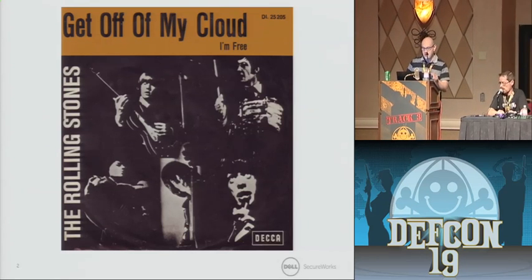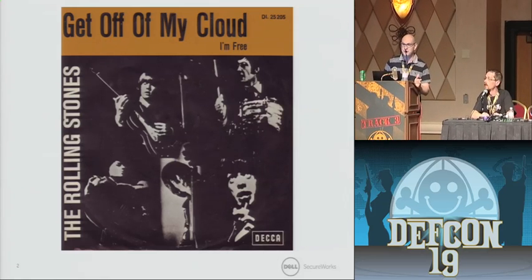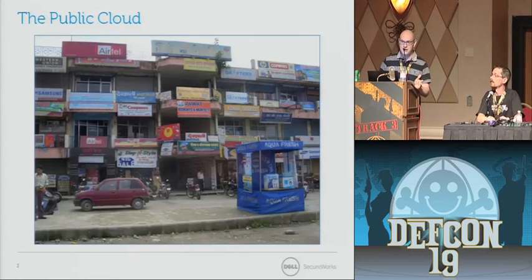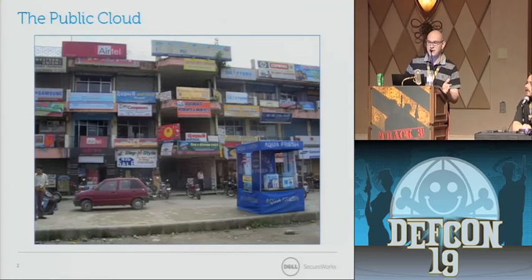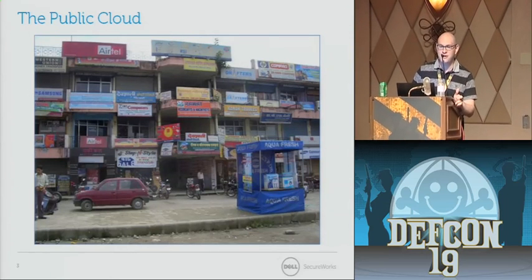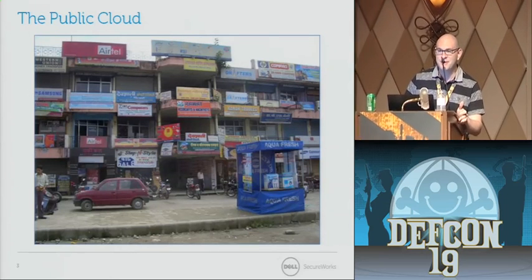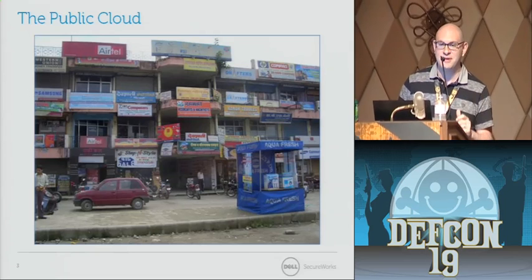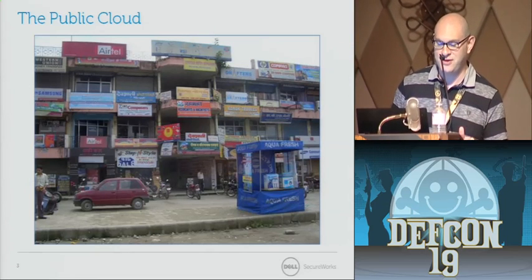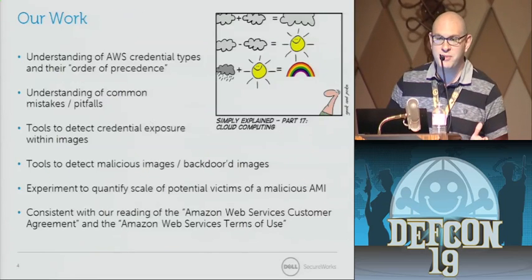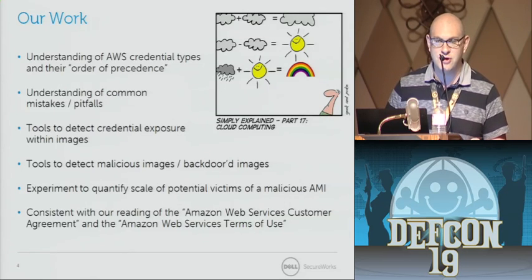Today we'll be giving a talk we call 'Get Off of My Cloud.' Just to start with a little thought — or a pictograph, if you will — this is one conception of multi-tenancy in the cloud: a crazy bazaar of different customers all sitting next to each other on the same shared infrastructure.